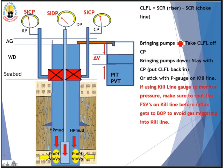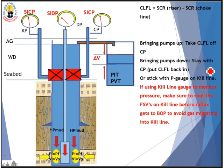For choke line friction loss, we take the slow circulating pump rate of the riser and deduct the slow circulating pump rate of the choke line. When we bring the pump up and run it, we take choke line friction loss off the casing pressure gauge. When shutting down the pump, we put choke line friction loss back onto the casing pressure gauge. If you plan to use the kill line gauge to monitor pressure, remember to shut the fail-safe valves on the kill line before influx gets to the BOP, to avoid gas migrating into the kill line.